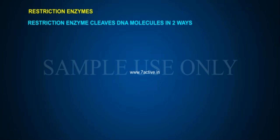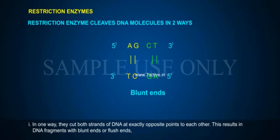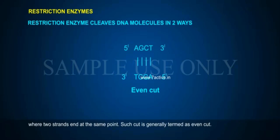Restriction enzymes cleave DNA molecules in two ways. In one way, they cut both strands of DNA at exactly opposite points to each other. This results in DNA fragments with blunt ends or flush ends, where two strands end at the same point. Such a cut is generally termed an even cut.